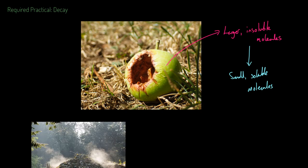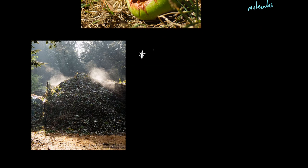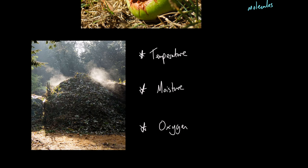This required practical is related to what happens in a compost heap. When gardeners make a compost heap, they need to consider different things for maximum rotting speed. They need to consider temperature, moisture, and oxygen, and balance these for the maximum speed to decompose dead plant material and turn it into something useful.